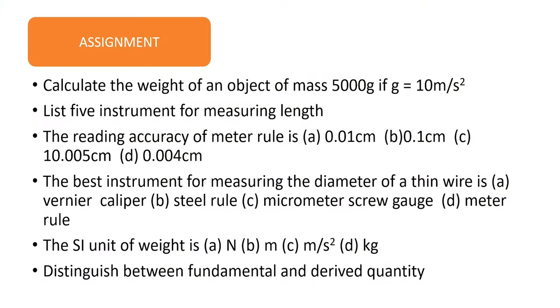We've come to the end of the teaching, and I have some questions for you as an assignment. Question 1: Calculate the weight of an object of mass 500 grams, if g, acceleration due to gravity, is 10 meters per second squared. Question 2: List 5 instruments for measuring length. Question 3: The reading accuracy of a meter rule is — A) 0.01 cm, B) 0.1 cm, C) 10.005 cm, D) 0.004 cm. Question 4: The best instrument used for measuring the diameter of a thin wire is — A) Vernier caliper, B) Steel rule, C) Micrometer screw gauge, D) Meter rule. Question 5: The SI unit of weight is — A) N, Newton, B) M, meter, C) meter per second squared, D) kilogram. The last question: Distinguish between fundamental and derived quantities.